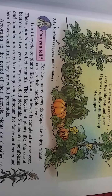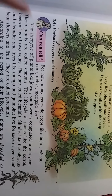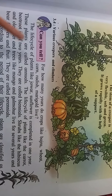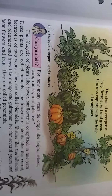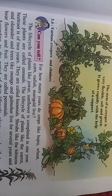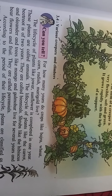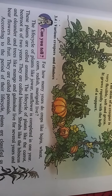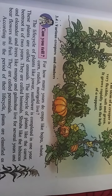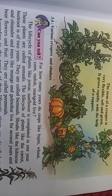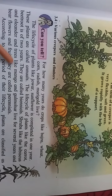The life cycle of plants like carrot and beetroot is two years. They are called biennials. Shrubs like hibiscus and oleander, and trees like mango and gulmohar, live for several years and bear flowers and fruits. They are called perennials.